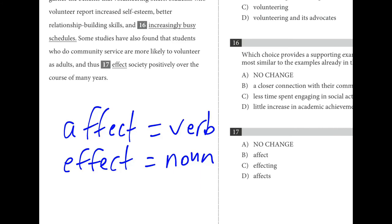For seventeen, remember that 'affect' with an A is a verb, and 'effect' with an E is a noun. Here we see 'to volunteer and affect,' so we want the verb form to match 'volunteer.' We don't need -ING or anything else — match it up with 'volunteer' as closely as possible. That's why B is the best choice.